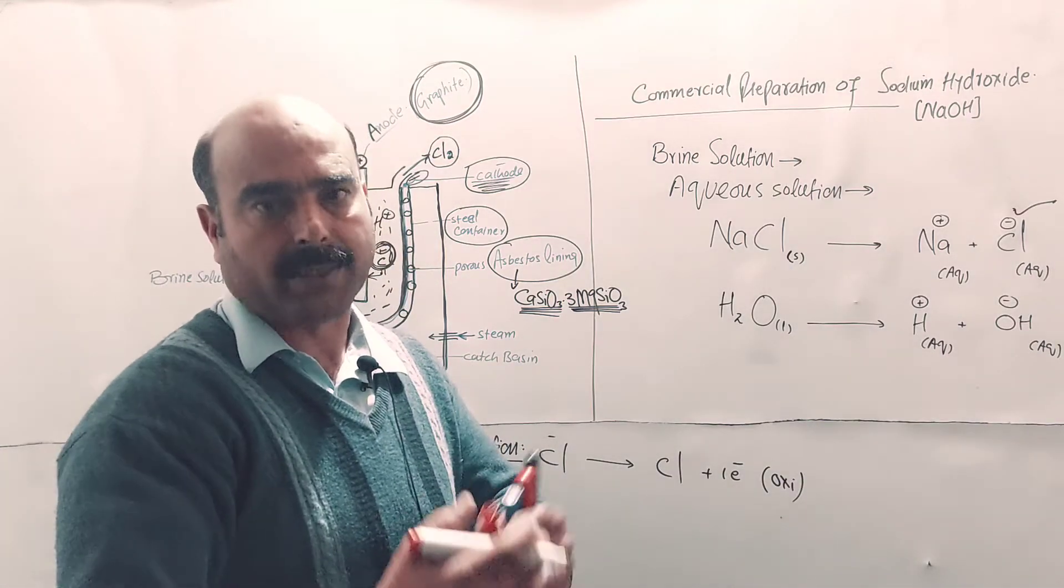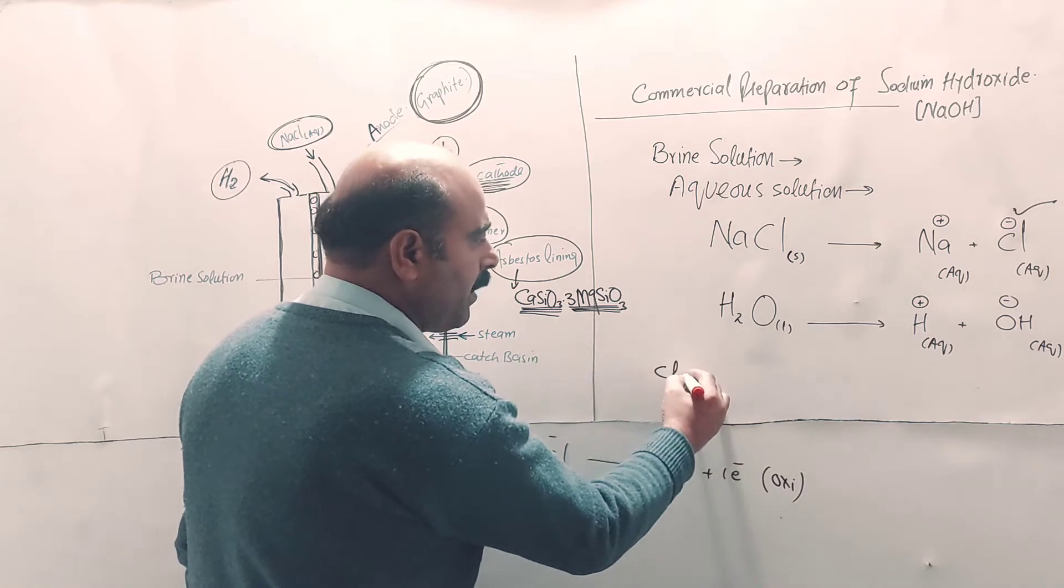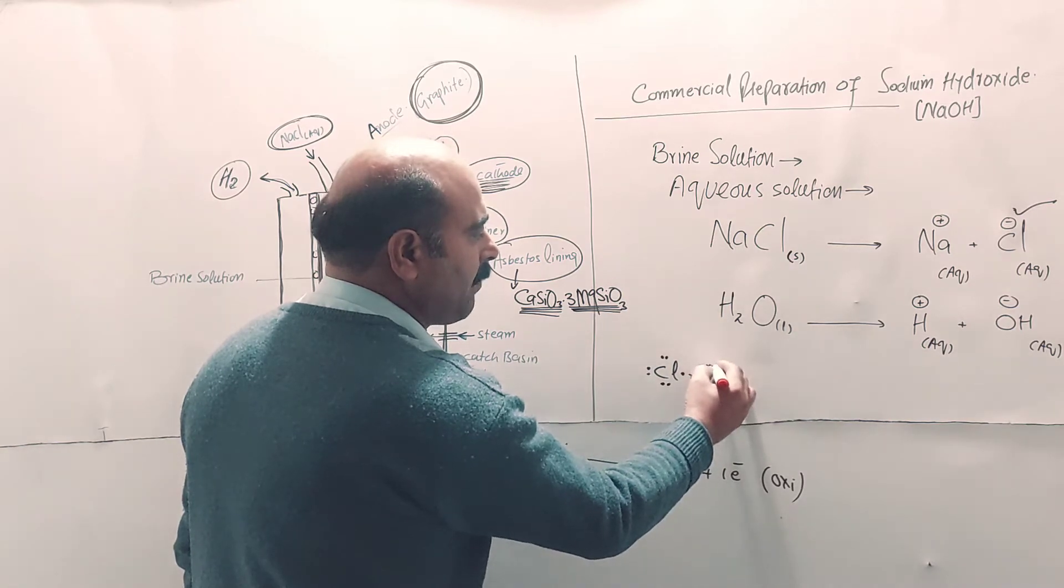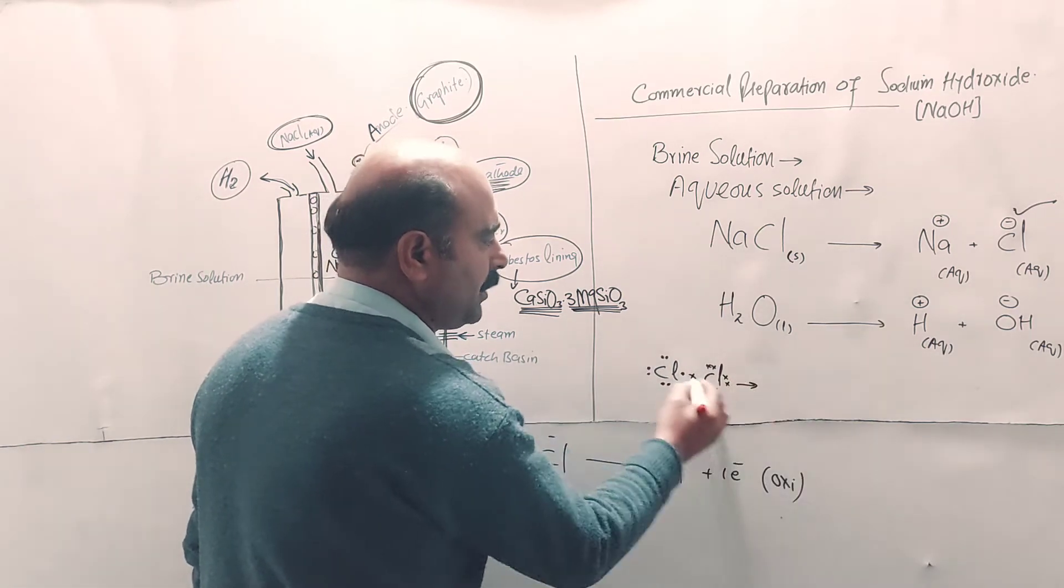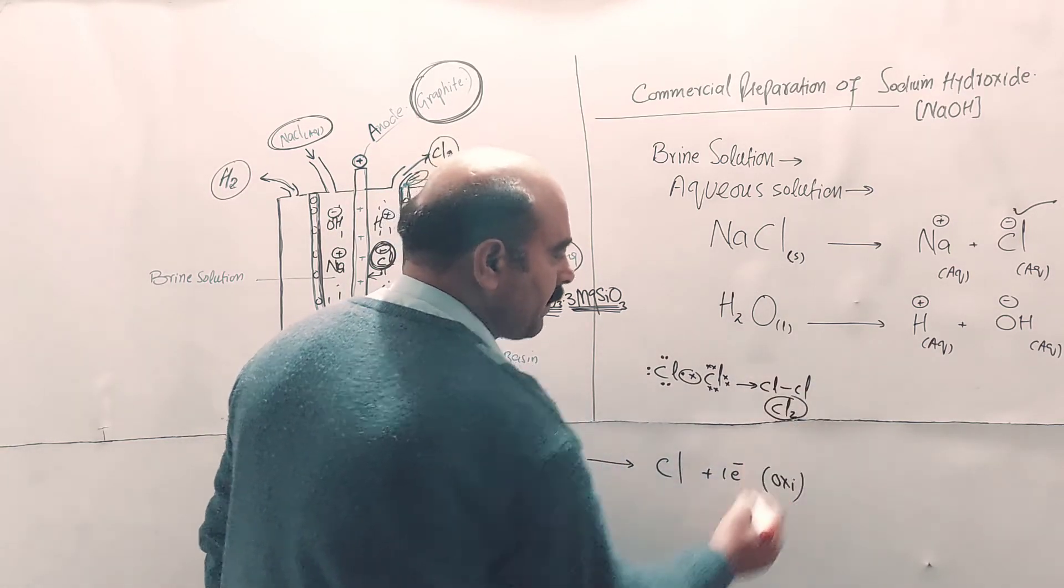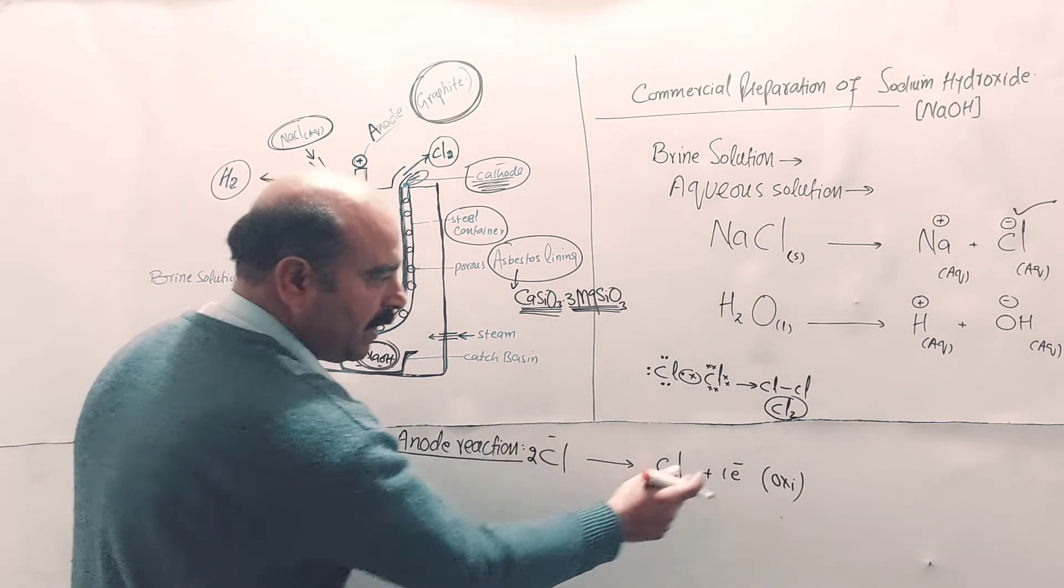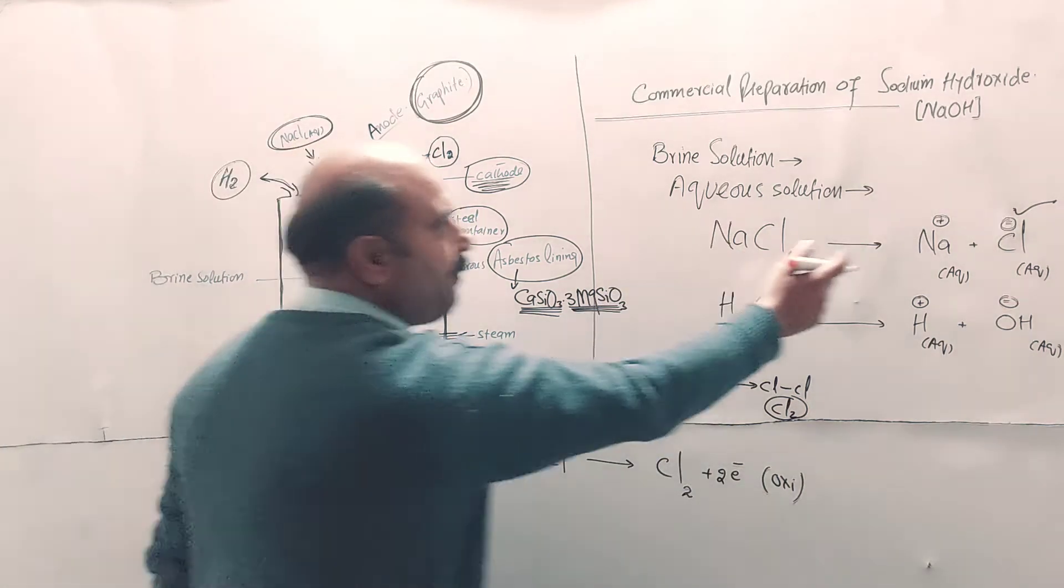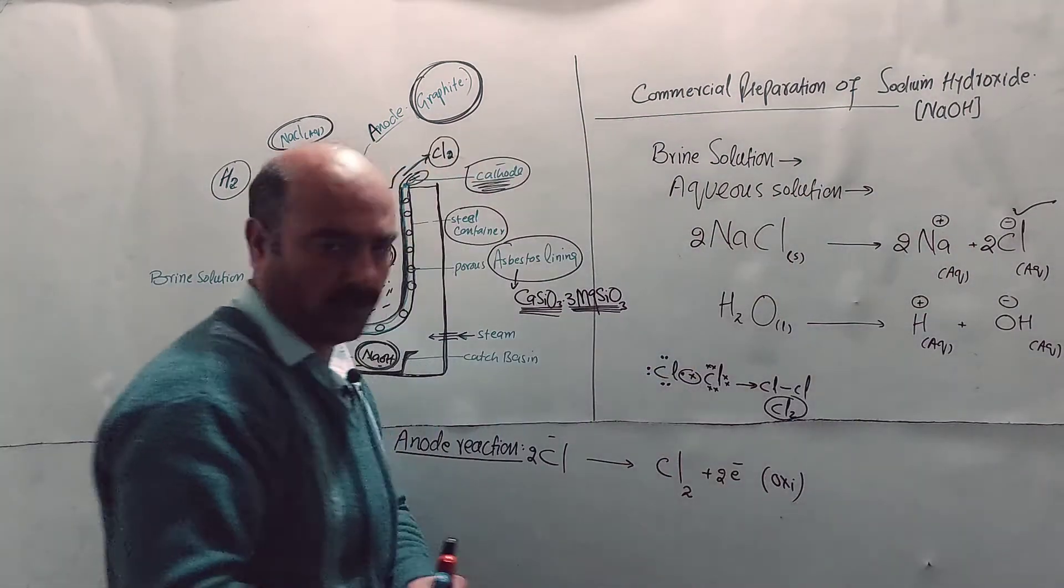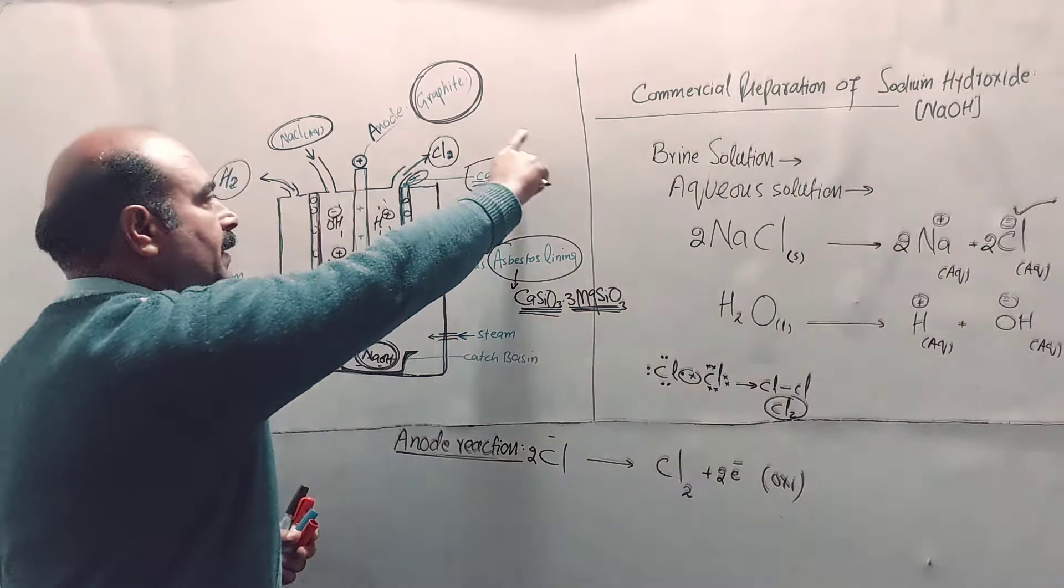Chlorine atoms can't exist in atomic state because of their incomplete last shell. Two chlorine atoms share one electron equally, forming a single covalent bond, and chlorine atoms convert to chlorine molecules. Chlorine exists in molecular form in gaseous state. The equation will be multiplied by two to balance it - two chloride ions lose two electrons to form one chlorine molecule.